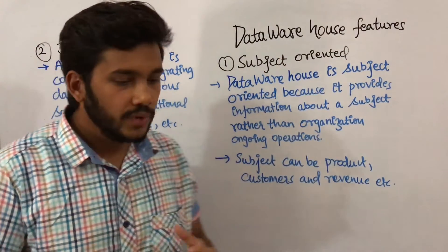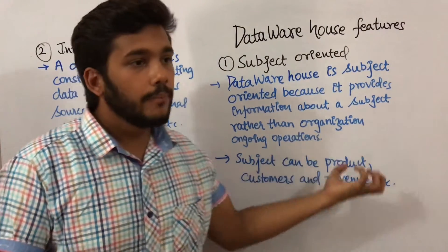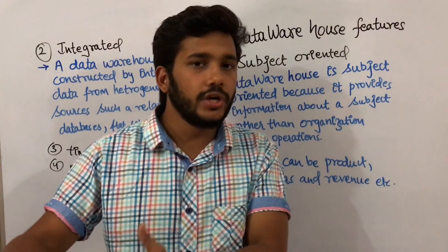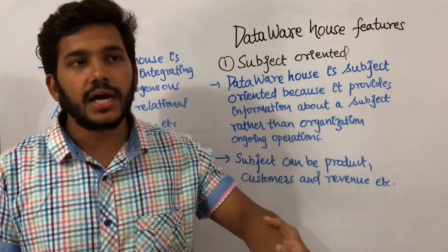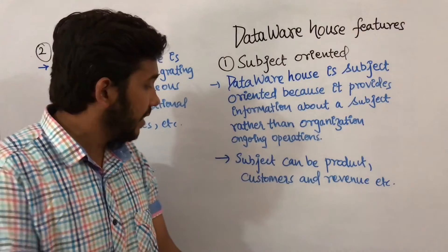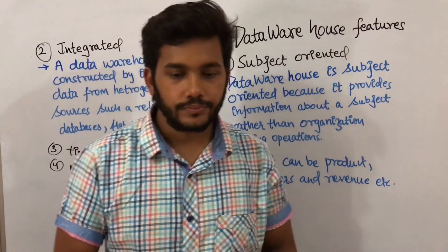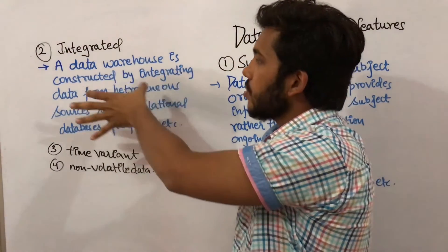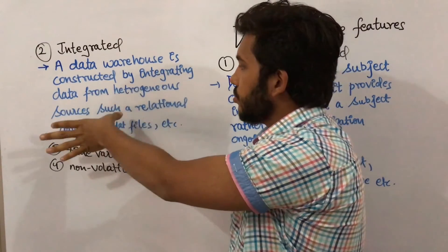So data warehouse data can be subject oriented across different subjects. For a restaurant, subjects can be customer, product, or revenue.